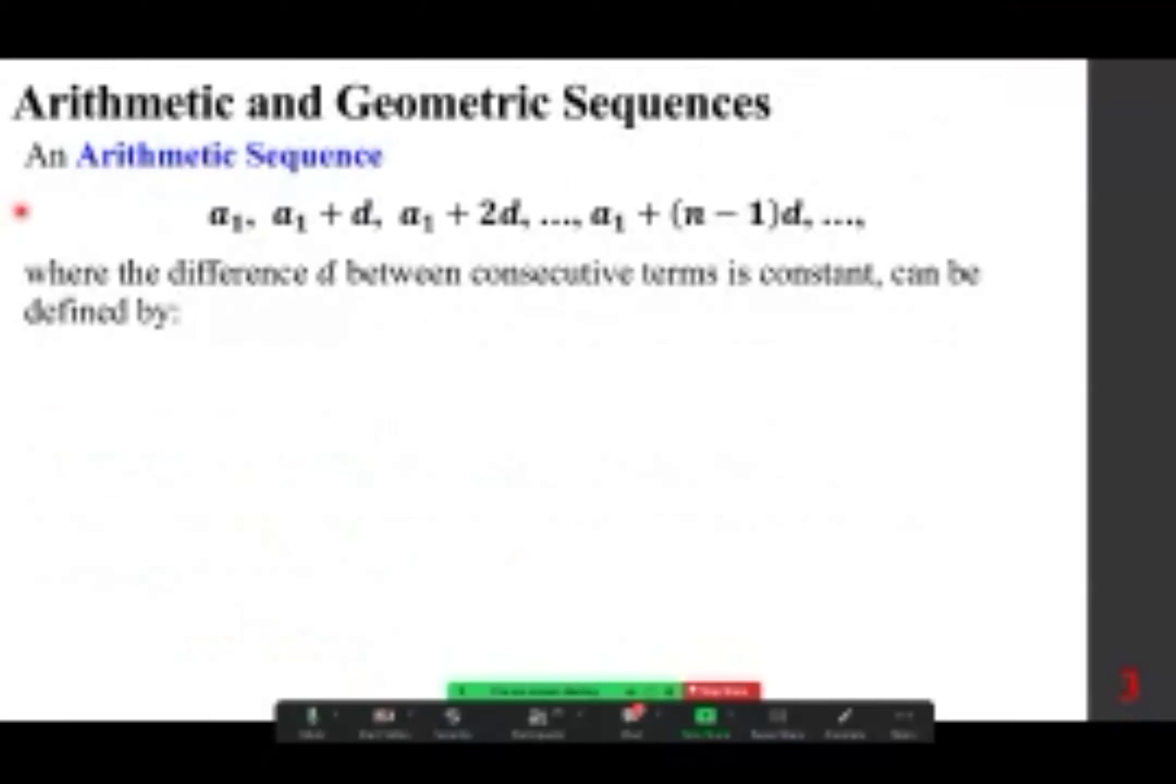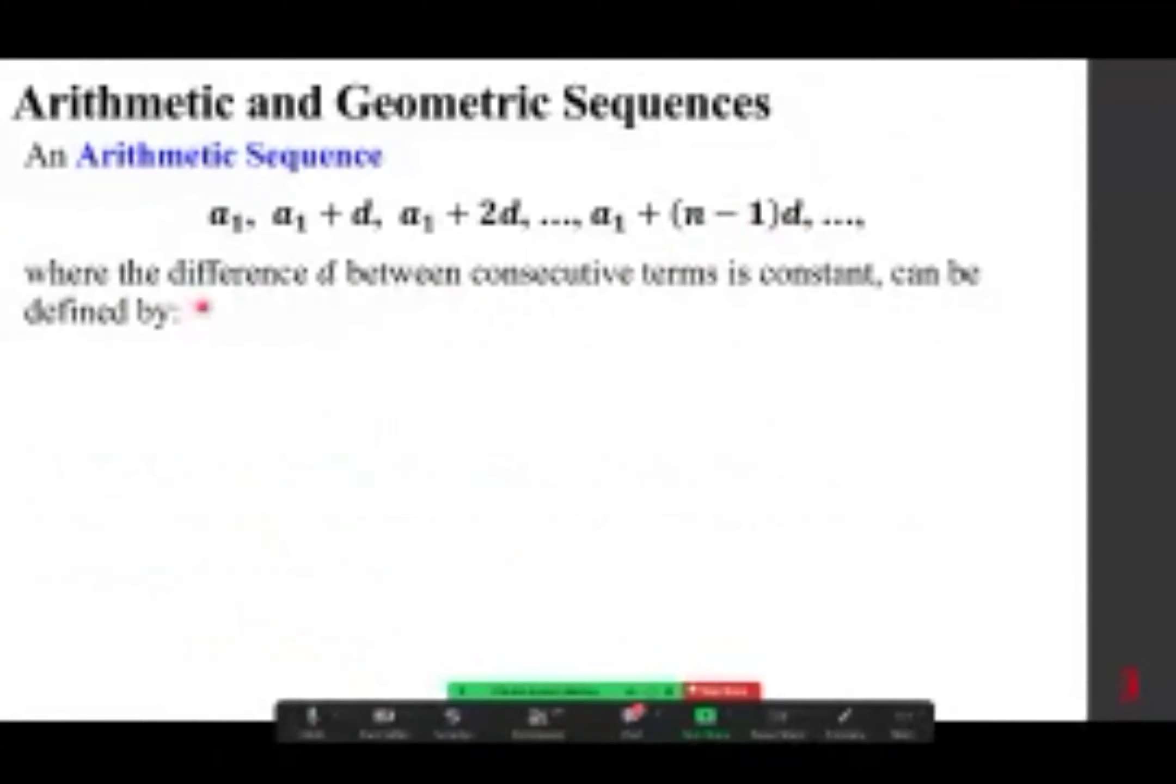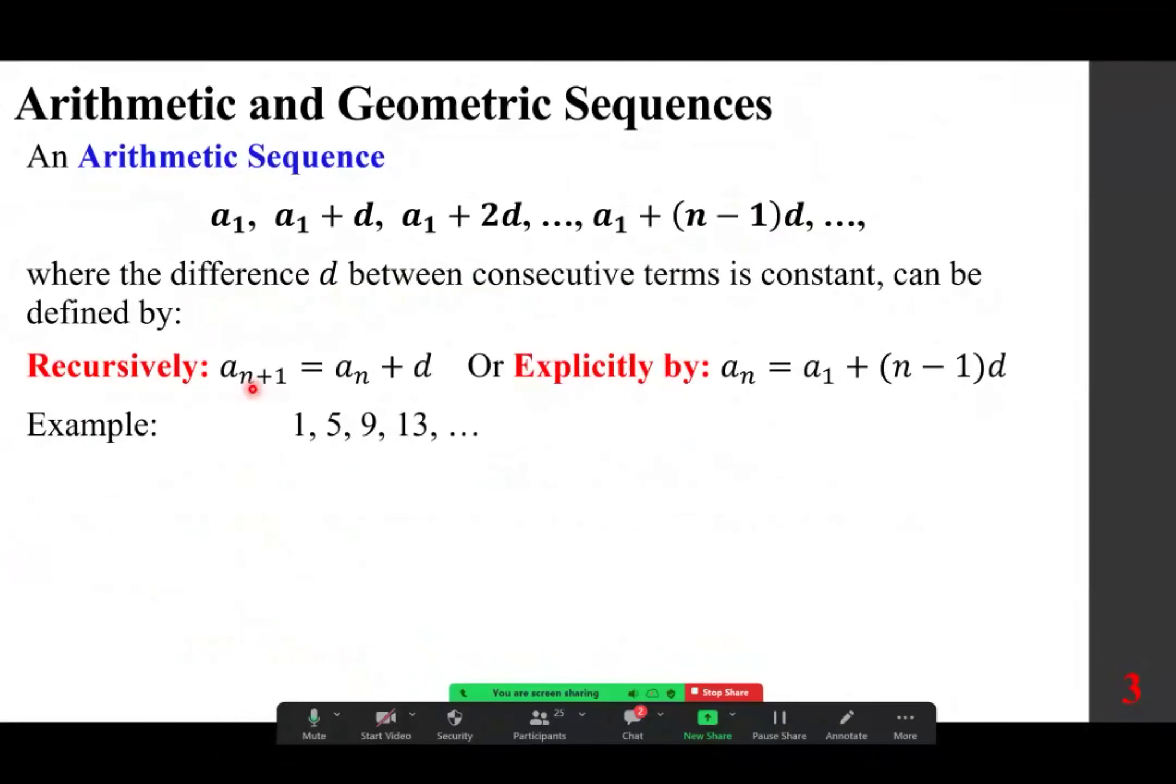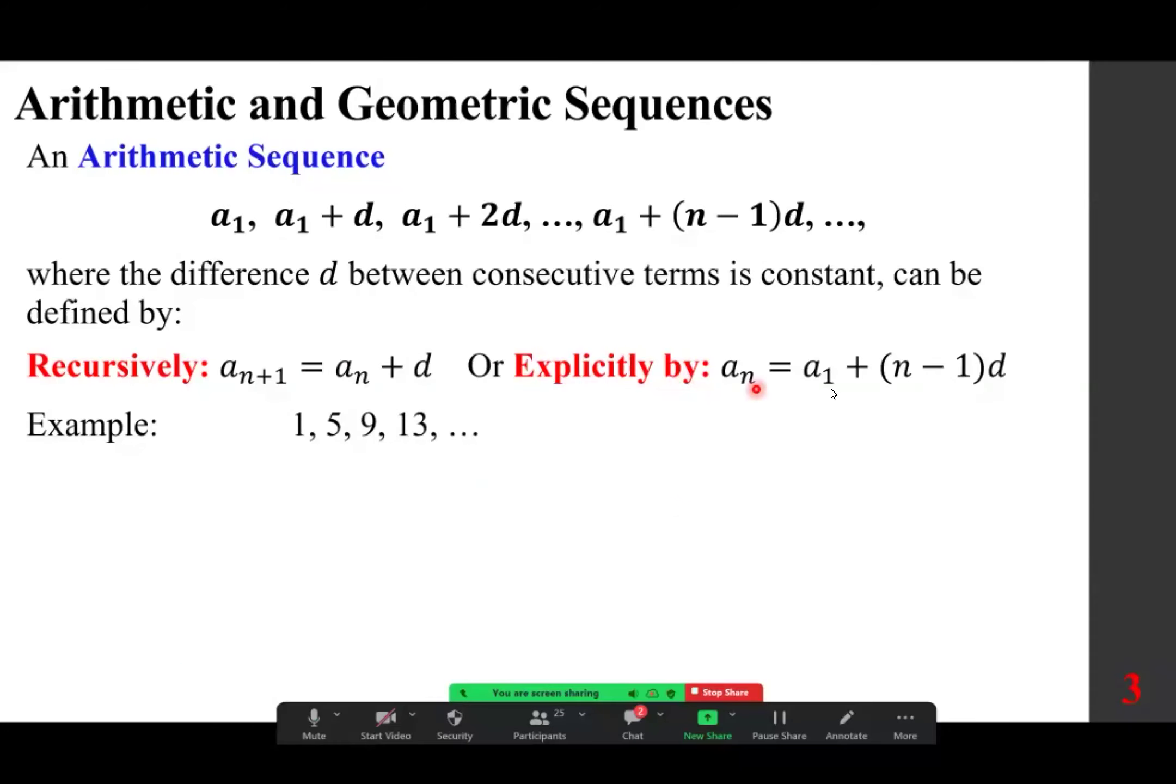An arithmetic sequence is in the form of a sub 1, a sub 1 plus d, all the way to a sub 1 plus n minus 1 times d, where the difference d, also known as the distance between consecutive terms, is constant that can be defined by the following. If we go recursively, a sub n plus 1 is a sub n plus d, meaning if you want a term, pick a previous one and add a distance or difference, a fixed number. If you want it explicitly, a sub n is a sub 1 plus n minus 1 times d.